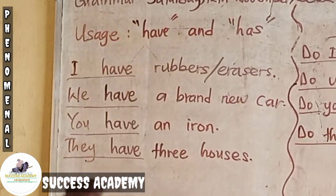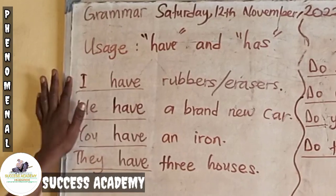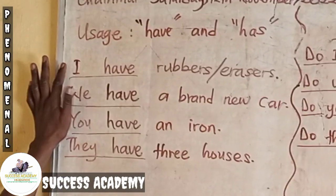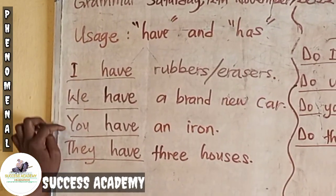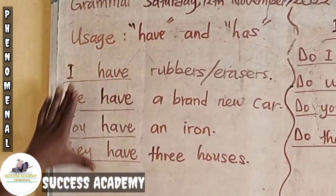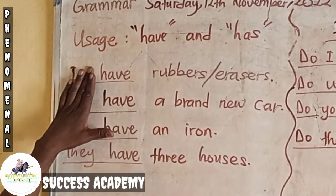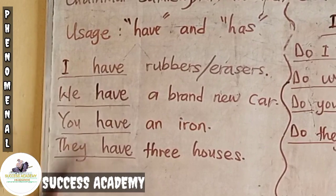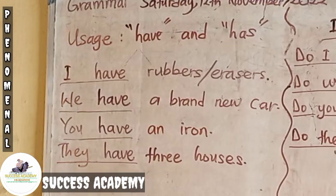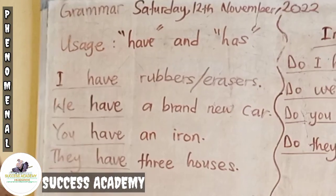Usage of have and has. If the personal pronoun is I, we, you, or they, we use it together with have. Here are example sentences.